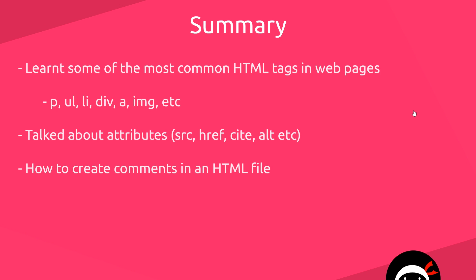Everything I've shown you in this video is probably enough to make a very simple HTML document. We've learned some of the most common HTML tags: paragraph, anchor, ul, li, image, div, and more. We've also seen what attributes are — extra information about tags — such as src for images, href for anchor tags, cite for blockquotes, and alt for image tags. We've also looked at how to leave comments, either to comment out code or add instructions for other developers. In the next video I want to take this further and start looking at forms in HTML.